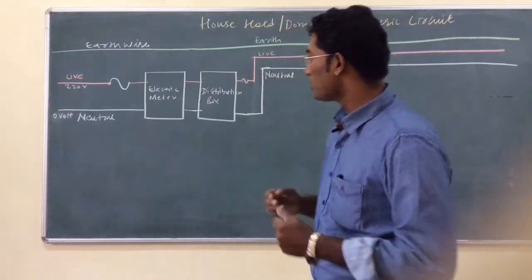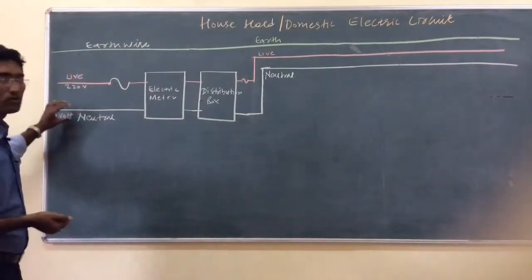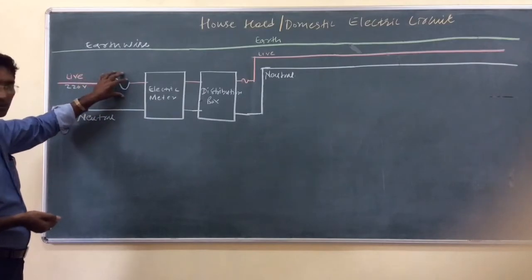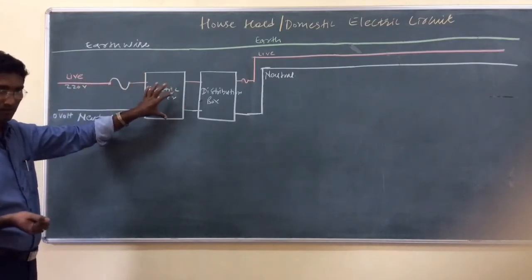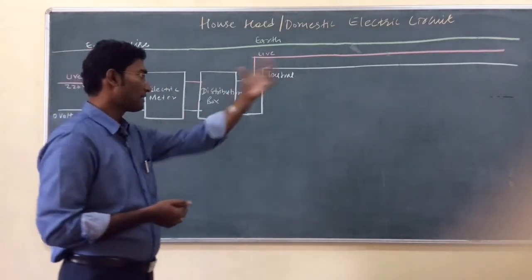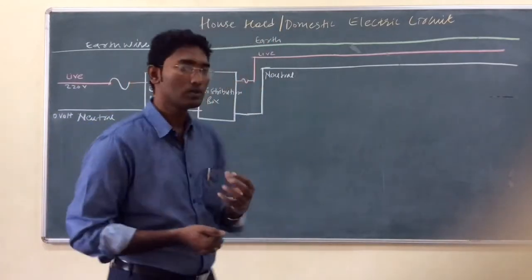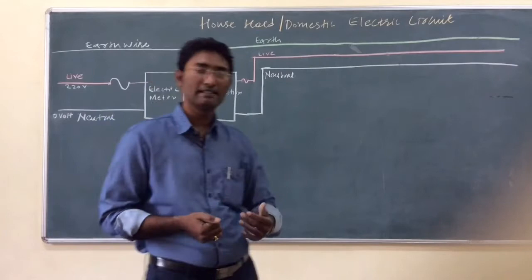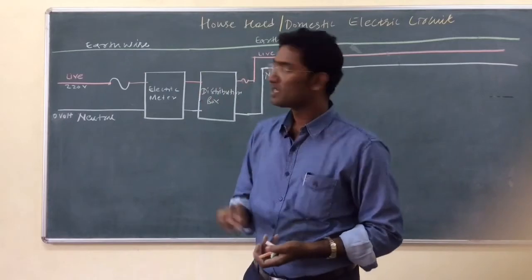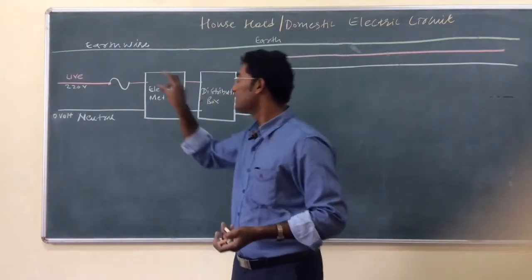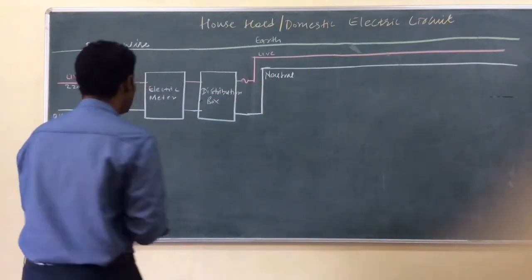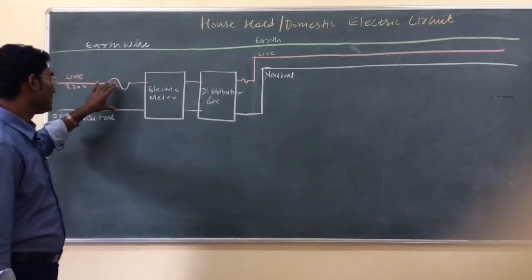As the live wire and neutral wire enter the house through cables, the live wire is first connected to a fuse before entering the electric meter. This fuse protects the electrical appliances and also allows maintenance work inside the house — you can remove the fuse to stop the electric supply, do the work, and then replace the fuse to restore electricity. So the fuse has many advantages.